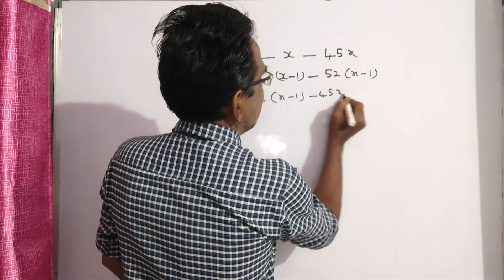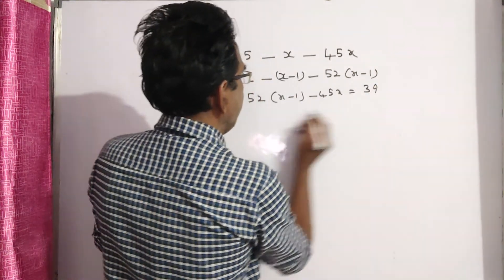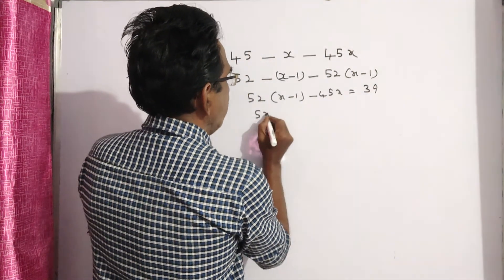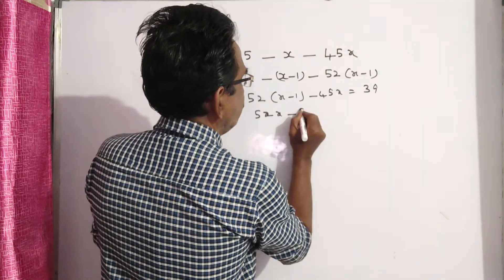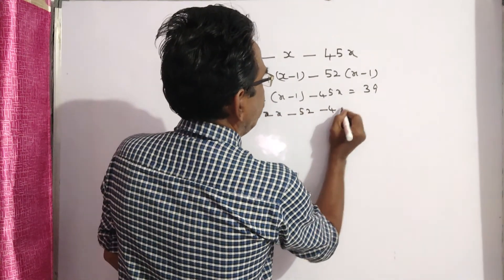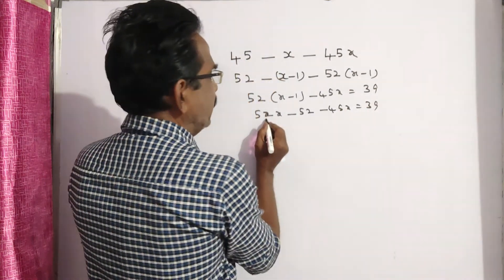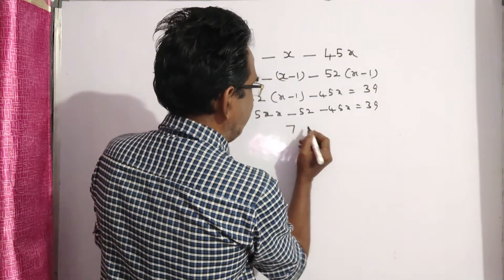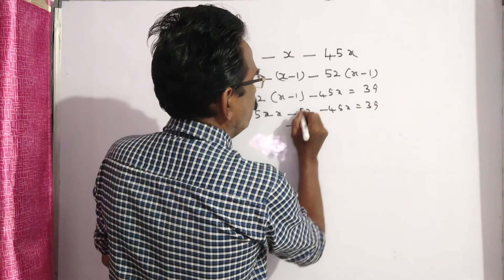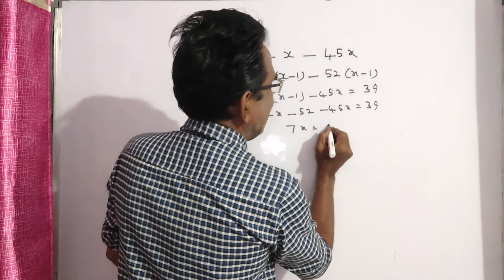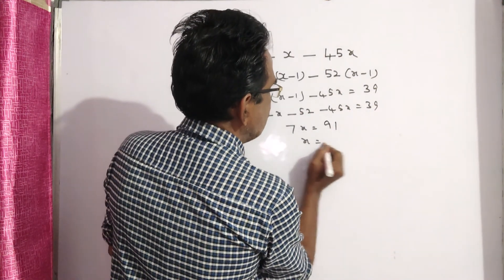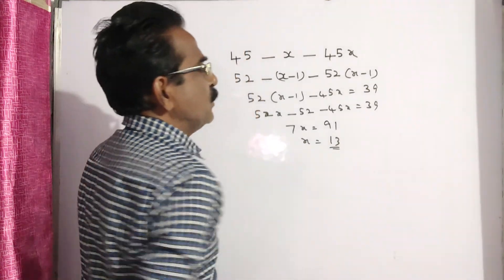52x minus 52 minus 45x is equal to 39. 52 minus 45, 7x is equal to 52 plus 39, 91. x is equal to 13.